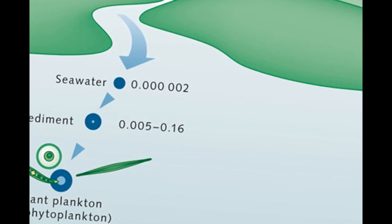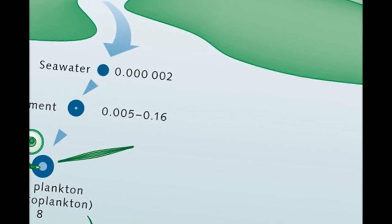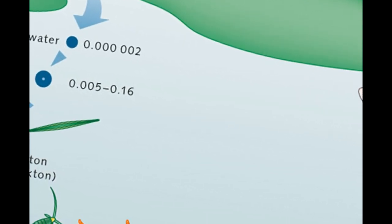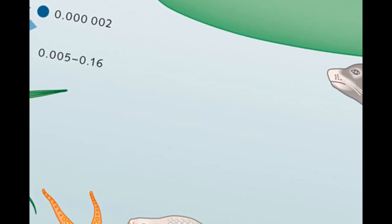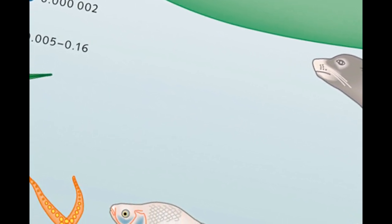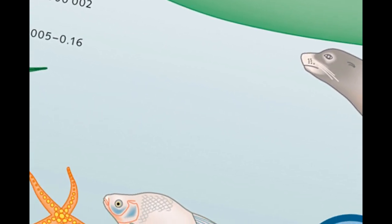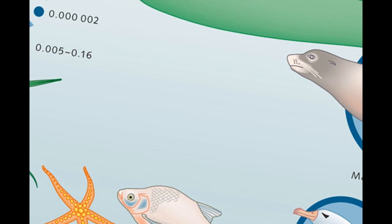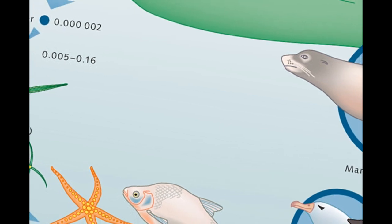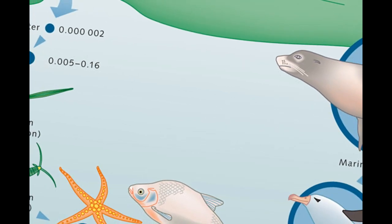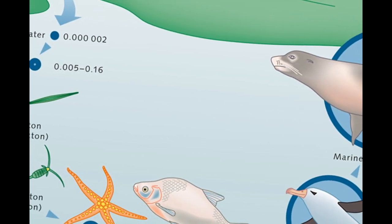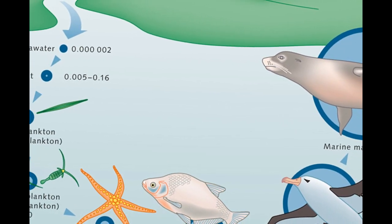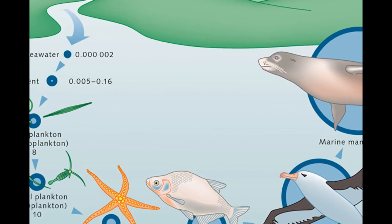In 2005, the 'Ndrangheta, an Italian mafia syndicate, was accused of sinking at least 30 ships loaded with toxic waste, much of it radioactive. This has led to widespread investigations into radioactive waste disposal rackets.